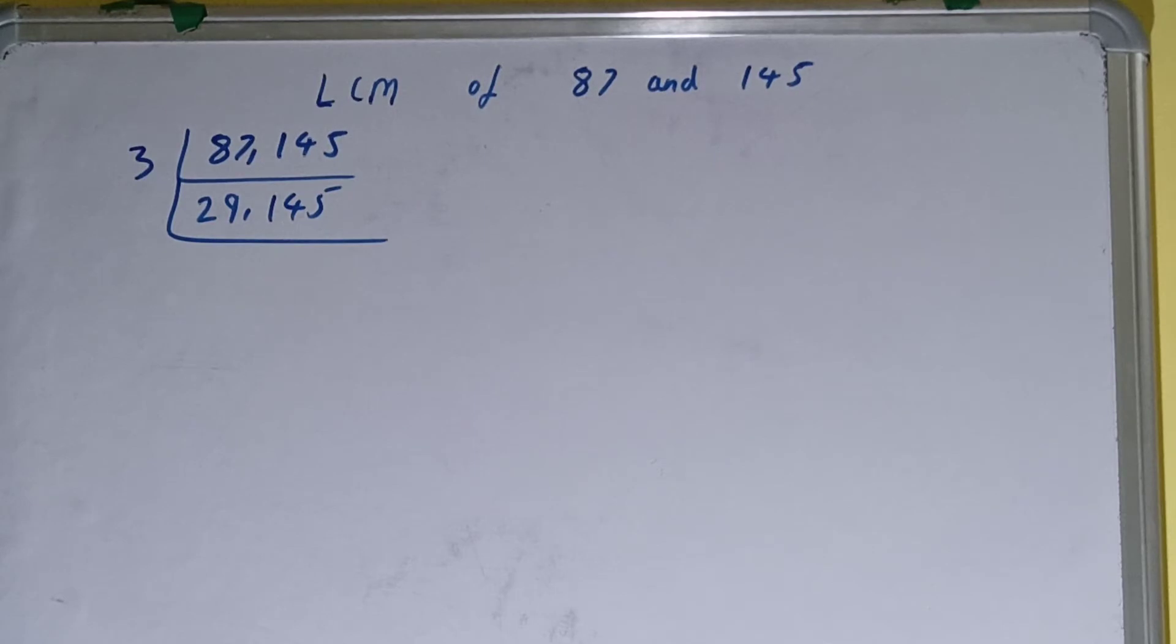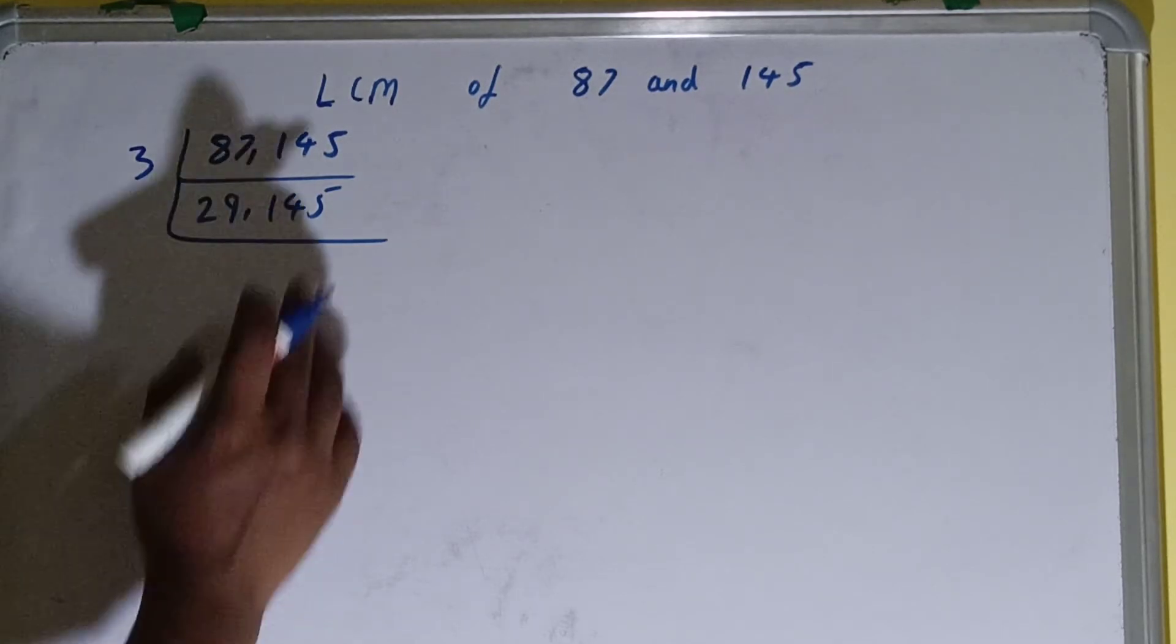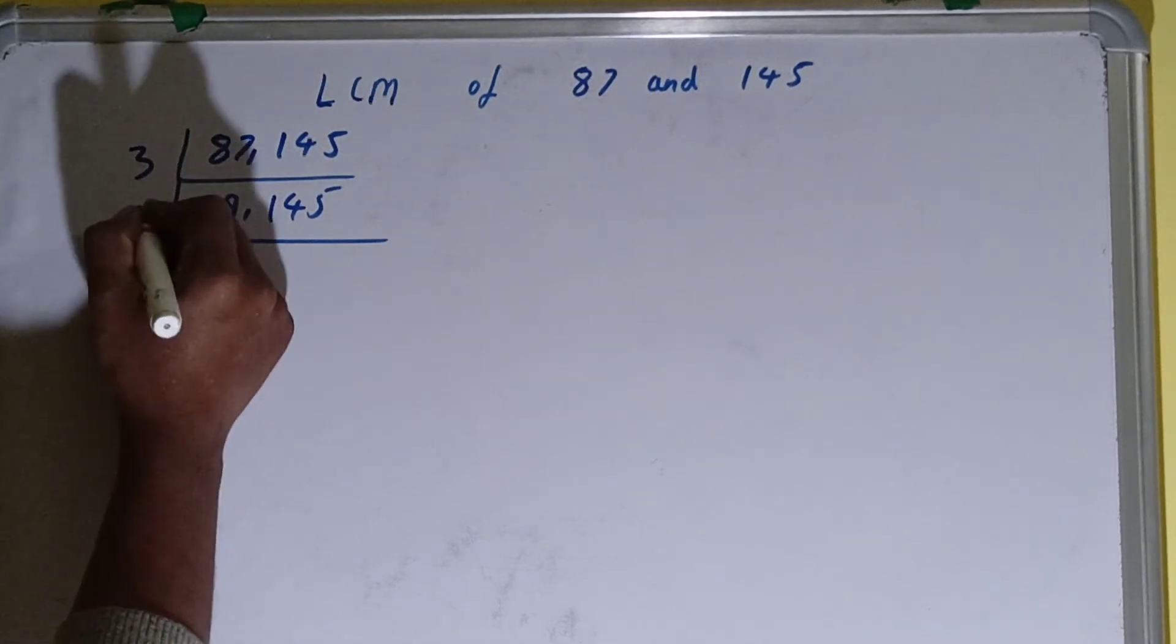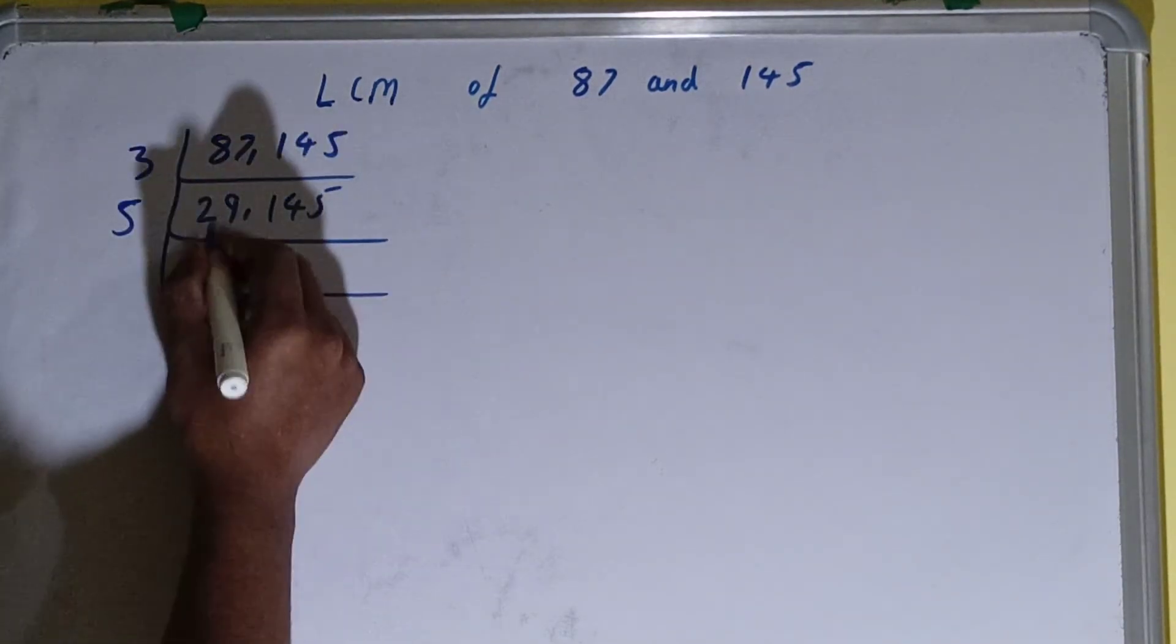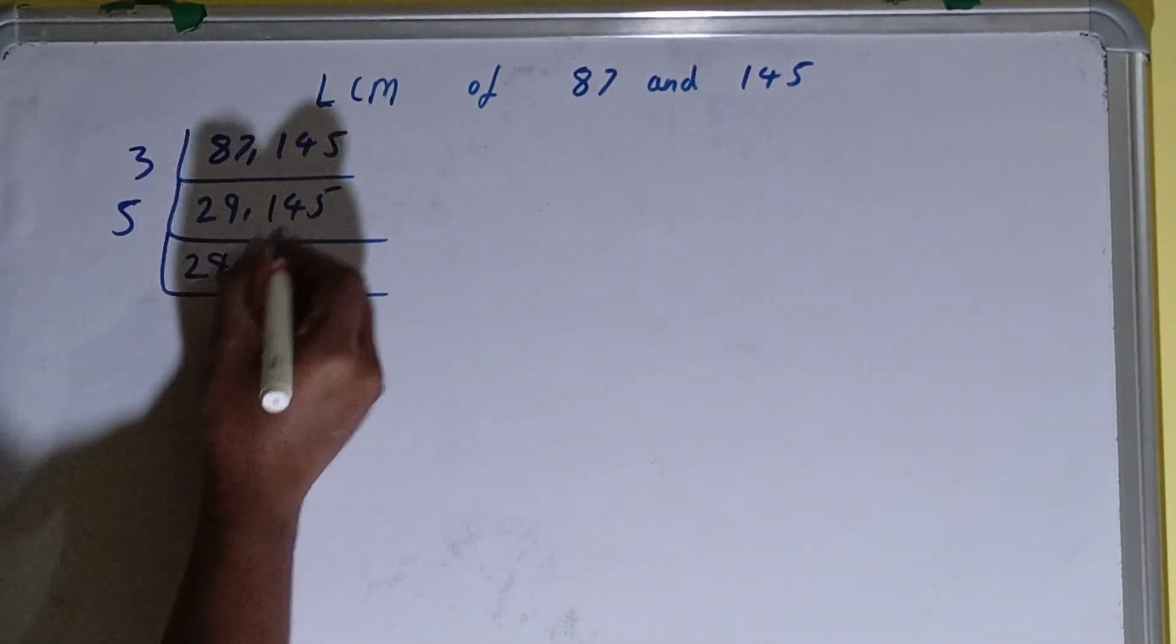So we'll go to the next lowest prime number, that is 5, and this number is divisible by 5, so we divide. And the first number is not divisible by 5, so we'll just copy it down.